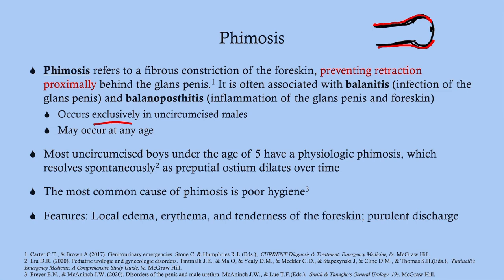Phimosis can occur at any age. However, there is something called physiologic phimosis, which is a normal phimosis occurring in young boys from infancy up to around age five. The preputial osteum — the aperture — is very narrow, so it's difficult to retract the foreskin, and that's okay at that age. However, if they pass five years old and still have phimosis, you need to refer to pediatric urology.